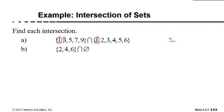Then I look at the number three in the first set, and I see it's also in the second set. So three is in the intersection. Then I look at the number five. Five is in the first set, and five is in the second set, so that's also in the intersection.